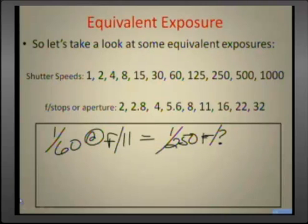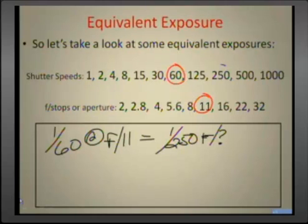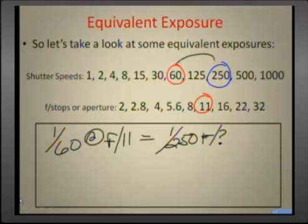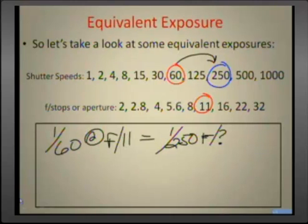If I am at a 60th of a second at f11 and now I'm going to change and go to a 250th of a second, what is happening here? I am going from a 60th to a 250th of a second. That means I'm going to a faster shutter speed, because 1/250th is a faster shutter speed than the 60th.